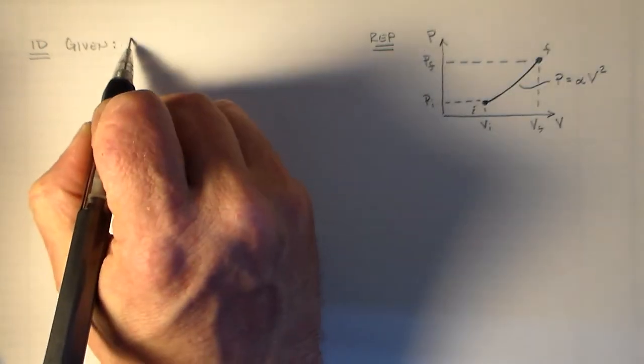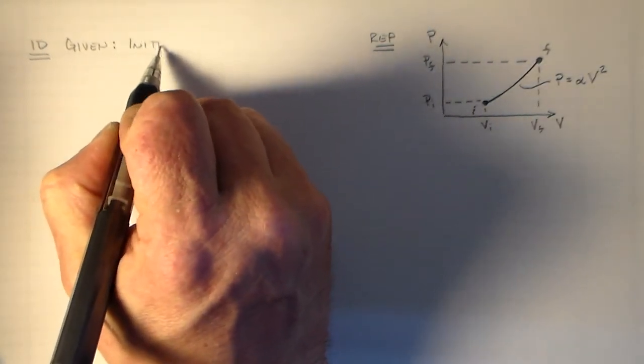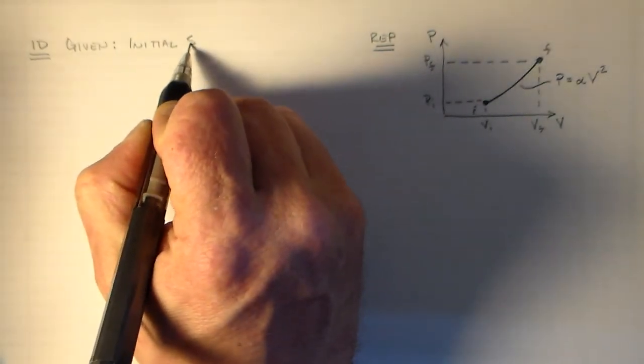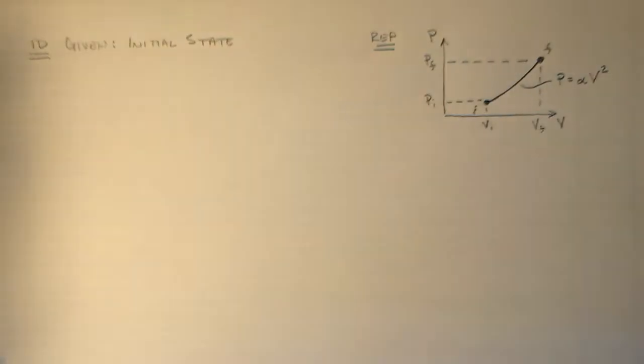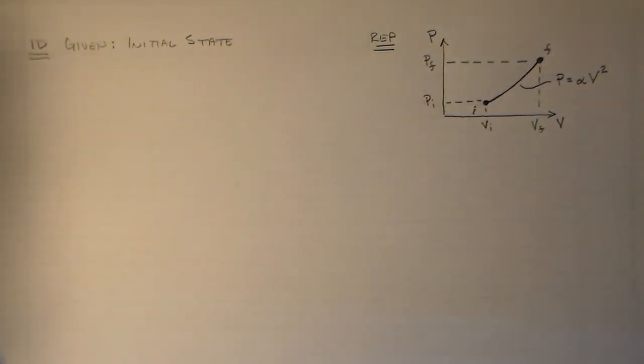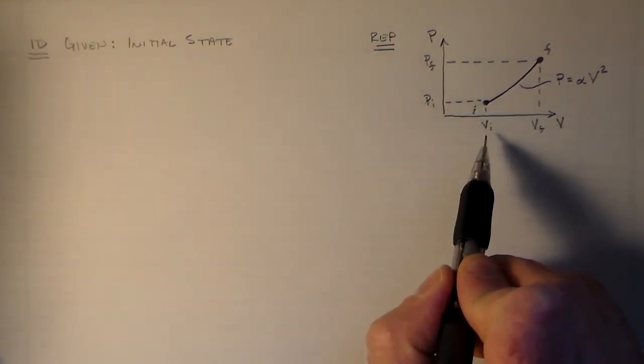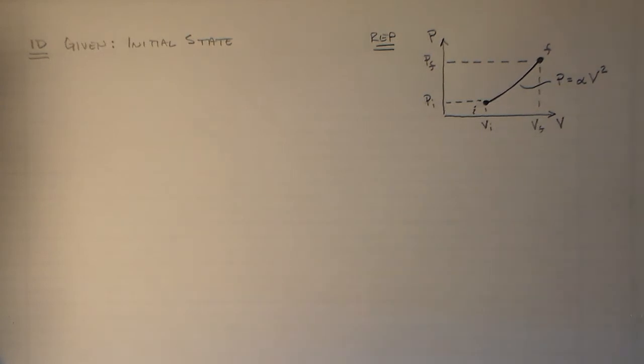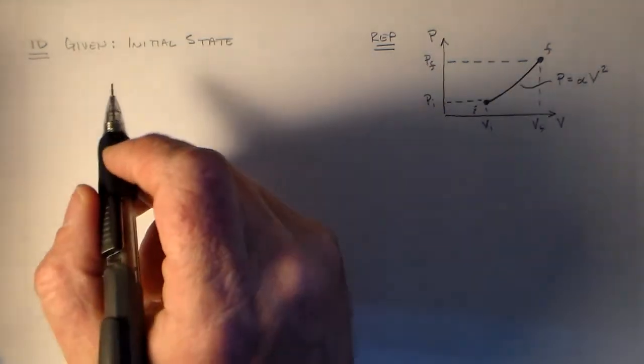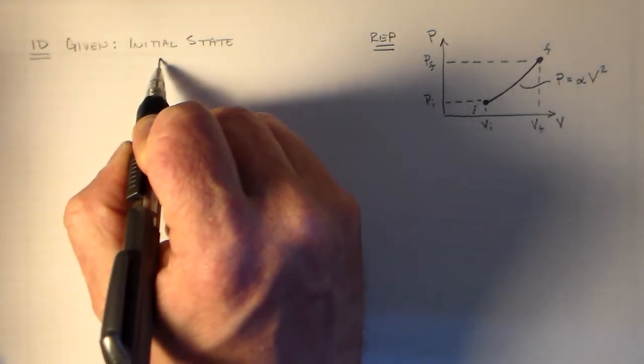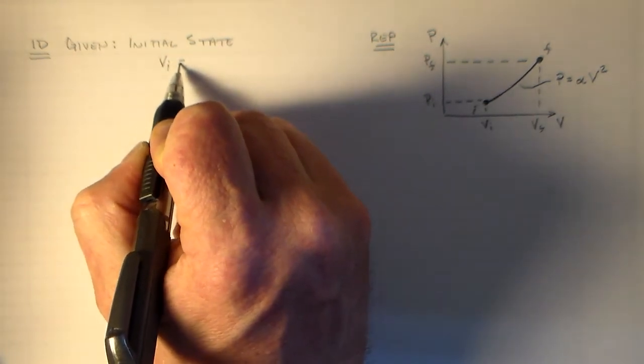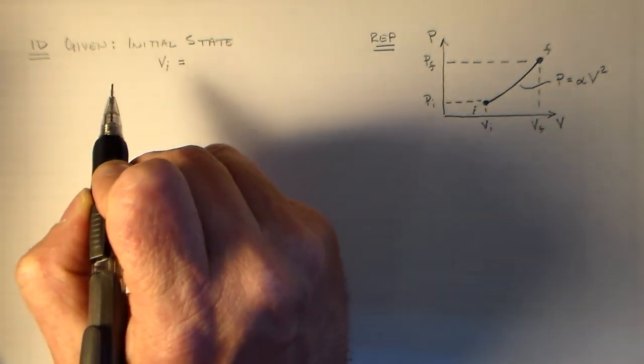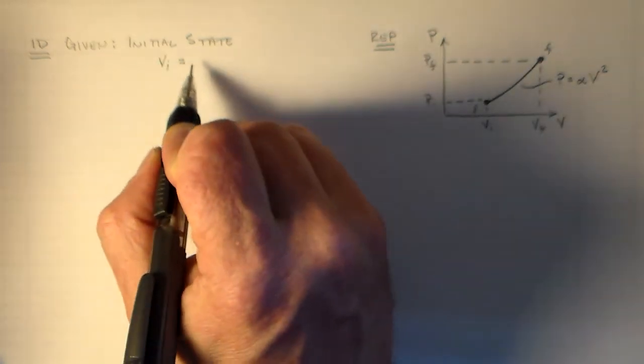So let's see what's going on. We've got a given. We are given an initial state. And that initial state has several macroscopic variables associated with it. Again, the ones we're interested in are pressure and volume. So it turns out, to figure this out, all we need is the volume. We have an initial volume of one cubic meter.